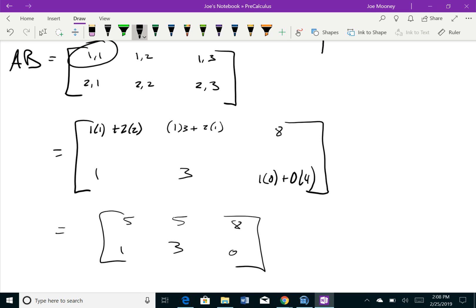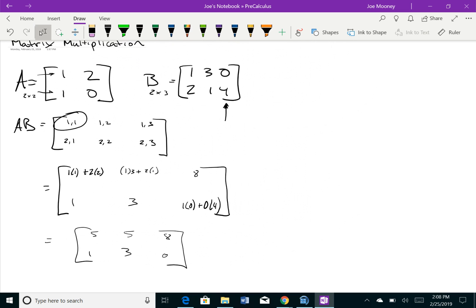Just to hammer home what I said earlier, let's try and do B times A. That's going to be 2×3 multiplied by 2×2. It wouldn't work. When I'm trying to do B times A, I would do 1×3 plus 3×1 plus 0×1 - but I run out of elements. That's why your rows of the second one have to be the same as the columns from your first one.